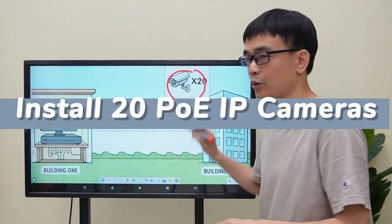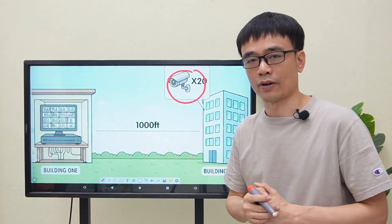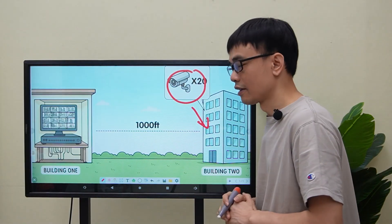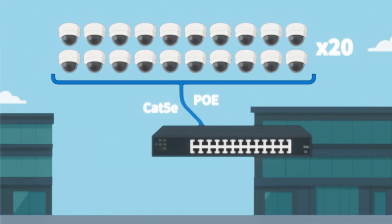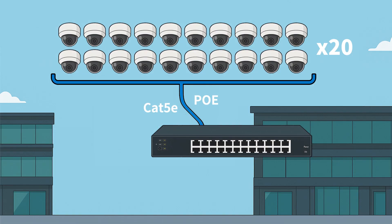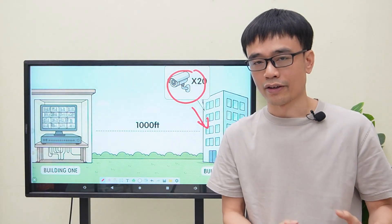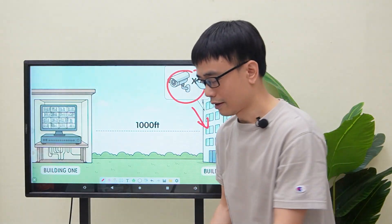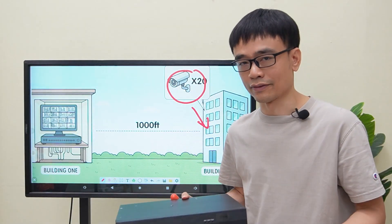The client needs to install 20 PoE IP cameras in this building. Since all these cameras are located in the same building, he needs a 24-port PoE switch. Put a Cat5 or Cat6 Ethernet cable from that PoE switch to all these cameras, then connect these cameras to that PoE switch. That PoE switch will provide the power to all these cameras. Then attach a network video recorder to that switch. The job is done.